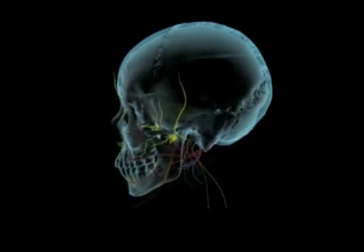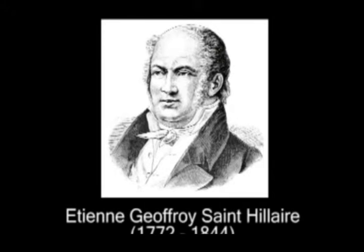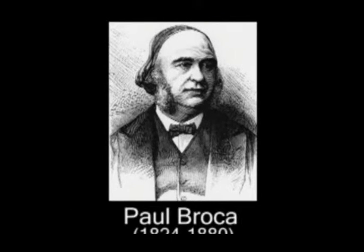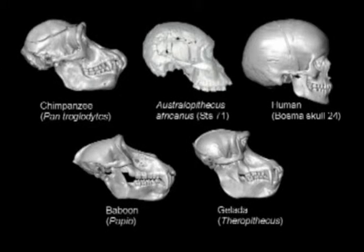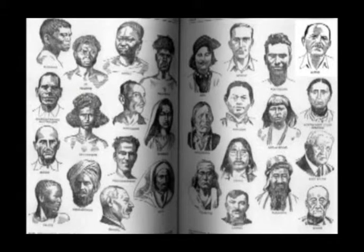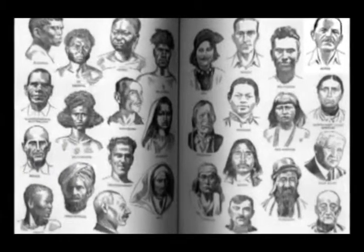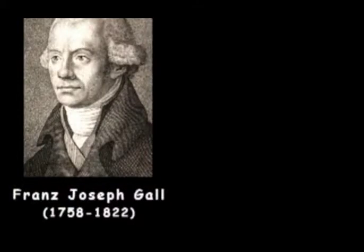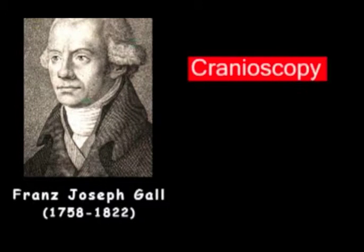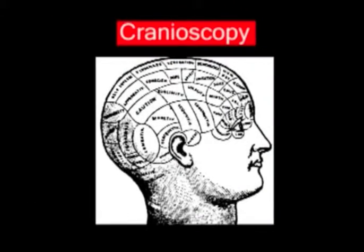Peter Camper developed a projection method to obtain craniometric data on the skull. He invented the facial angle to classify different races in the world. This scientific research was continued by Etienne Geoffroy St. Hilaire and Paul Broca. Measurements were first made to compare the skulls of man with those of other animals, constituting the first subdivision of craniometric studies. At the turn of the 19th century, Franz Joseph Gall developed cranioscopy, a method to determine the personality and development of mental and moral faculties on the basis of the external shape of the skull.